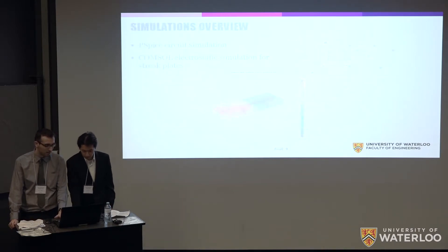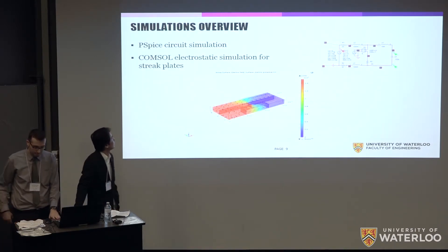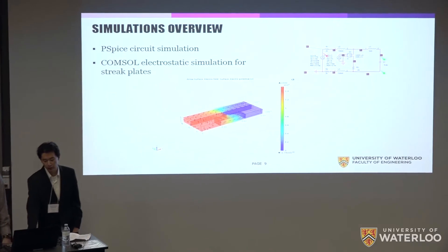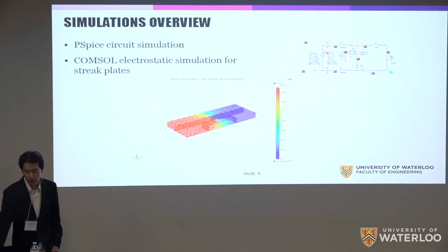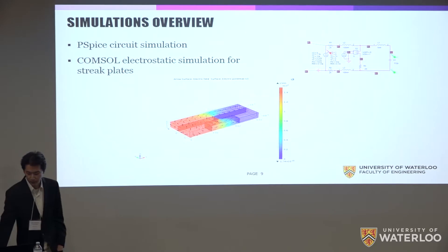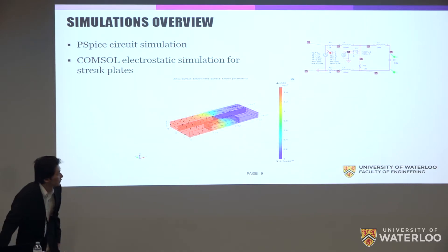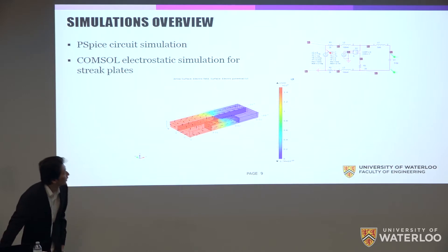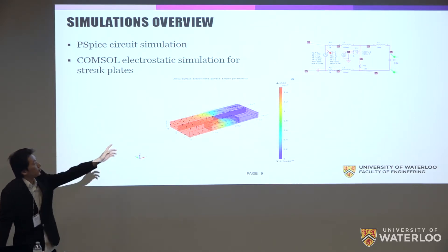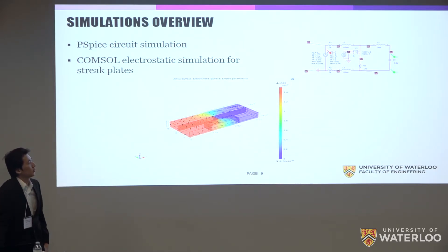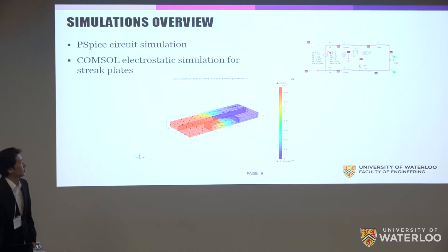George will now discuss the simulations we've done. We basically did two types of simulations: one for circuits using PSPICE, and another looking at the plate geometry using COMSOL Multiphysics. That's the circuit we simulated on PSPICE — there's a pulse source at 1.5 kV, and another pulse source that activates the voltage-controlled switch, which is how we control the switching for the gallium arsenide photoswitch.